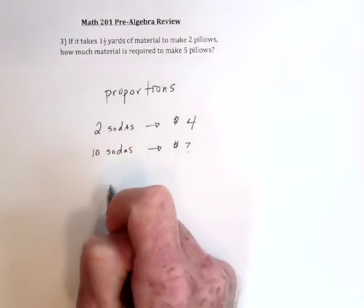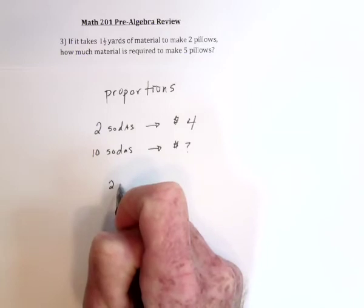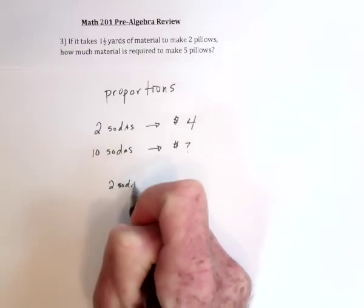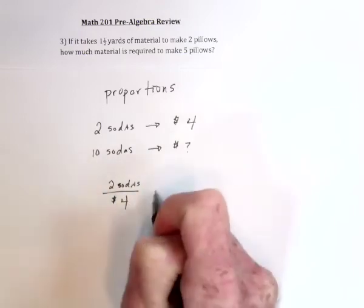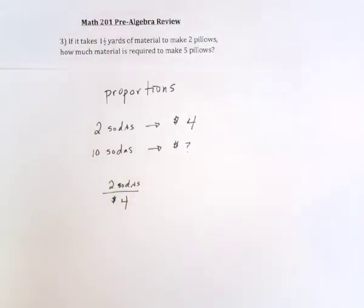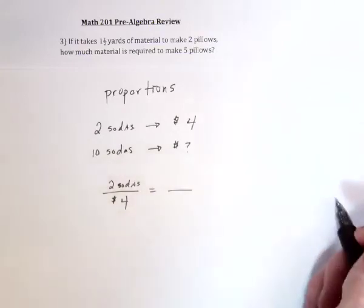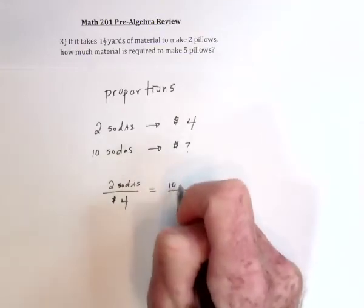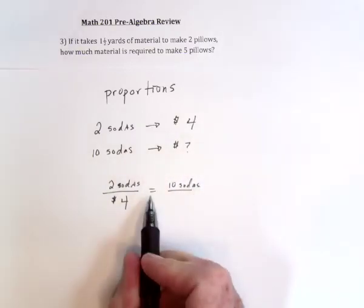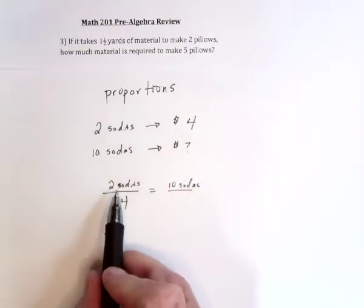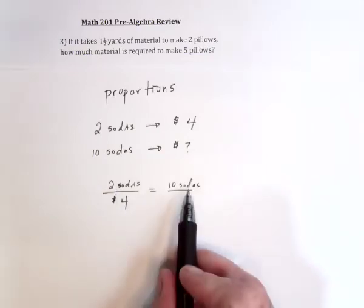Another way you can do it is say two sodas was four dollars, so I'm now making a proportion out of it, thus I can make an equation. Then what I do is say, alright, now I want to know about ten sodas. So this equal is basically saying, from the time that this happened until the time that this happened, the price of sodas did not change. So it's going to be proportional.